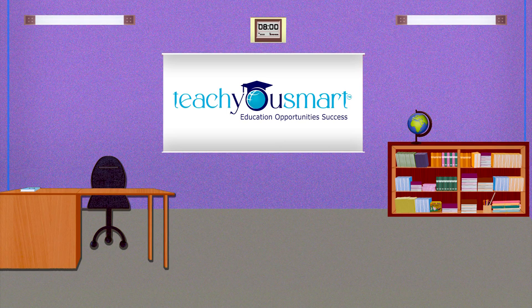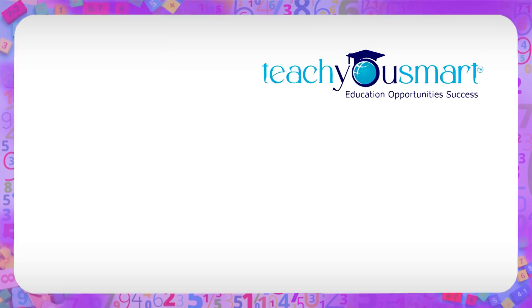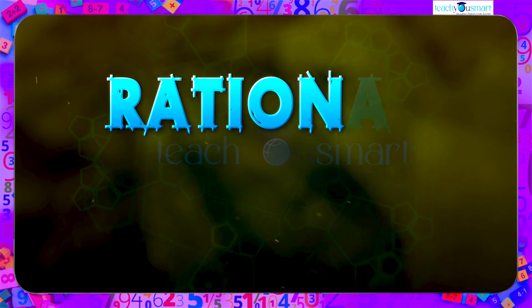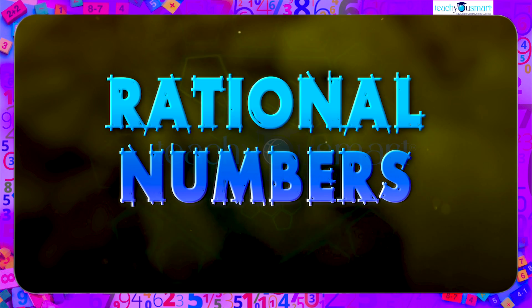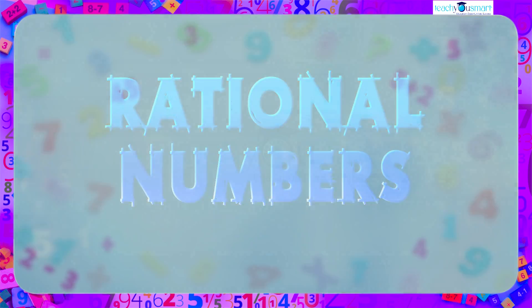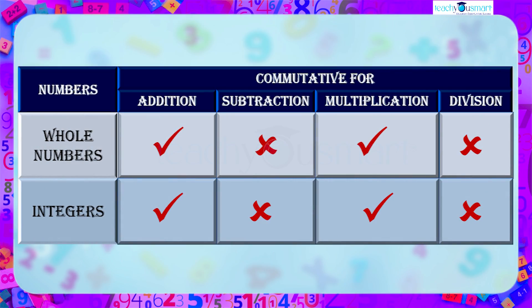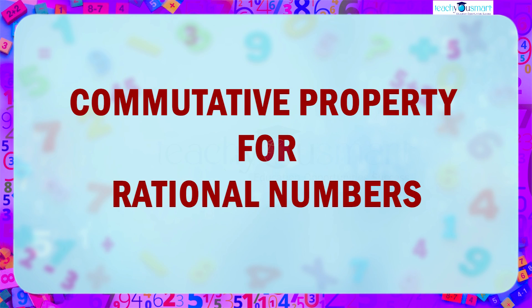Hello students, welcome to Teach You Smart. Let's continue our journey through rational numbers. In previous sessions we discussed commutative property for whole numbers and integers. Whole numbers and integers are commutative for addition and multiplication, but not commutative for subtraction and division. Today we are going to check commutative property for rational numbers.